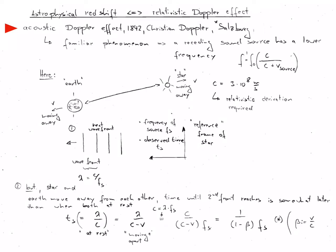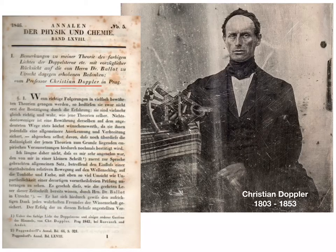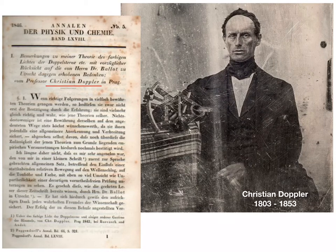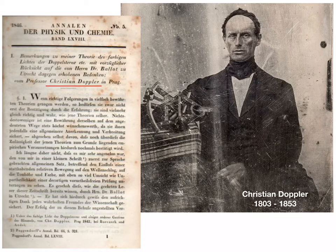The relativistic Doppler effect is similar to the classical acoustic Doppler effect with which we are familiar. The classical effect was first discussed by Christian Doppler from Salzburg in 1842 and then published in 1846. This early photograph shows him with a scientific instrument.